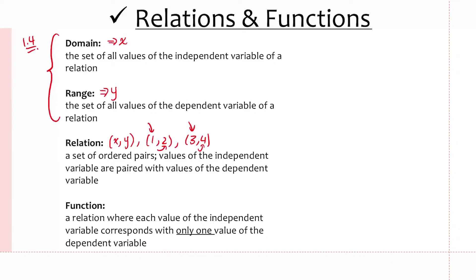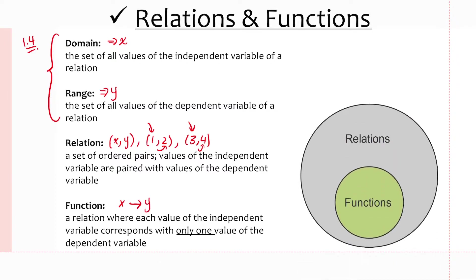A function, which is probably a newer idea, is a type of relation where each value of the independent variable corresponds with only one value of the dependent variable — so an x value only produces one y value. A relation is broad, and a function is a subset of relations, represented by a smaller circle because it's more limiting. Every function is a relation, but not every relation is a function.